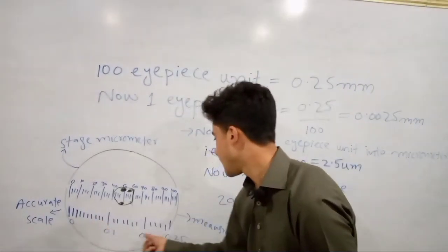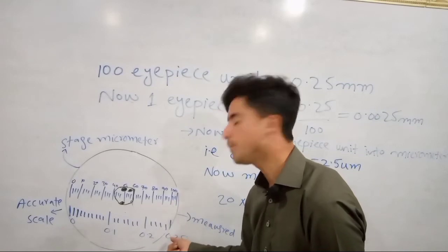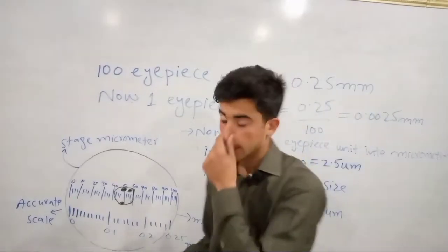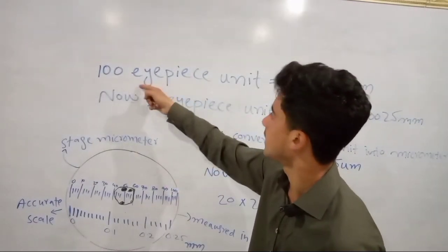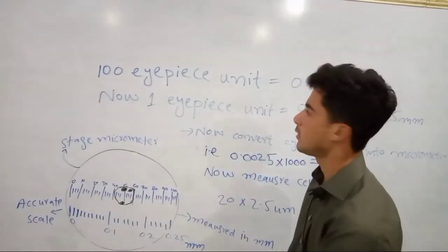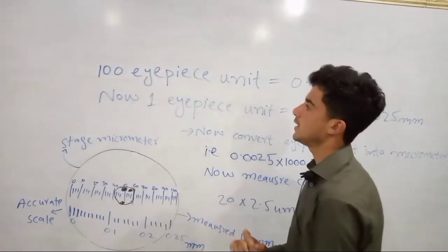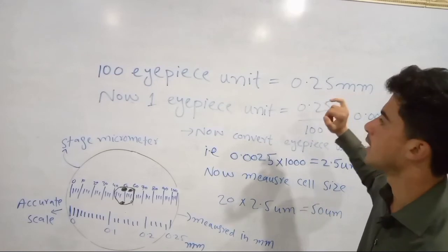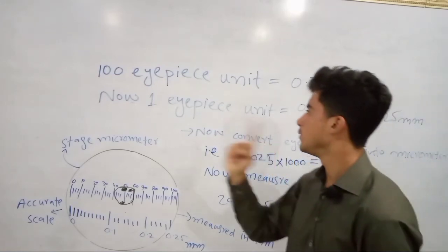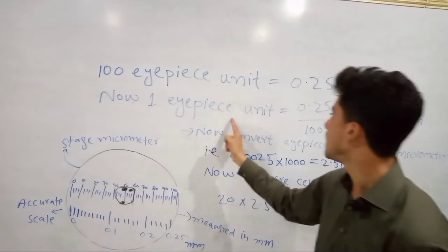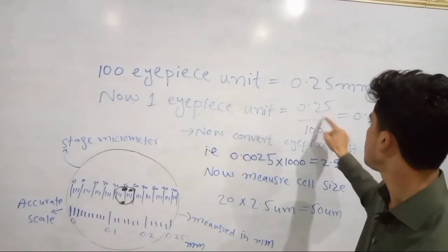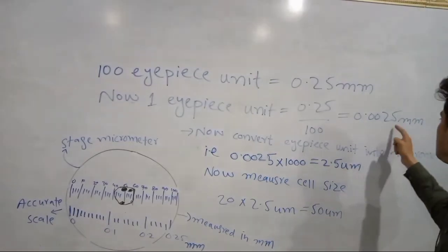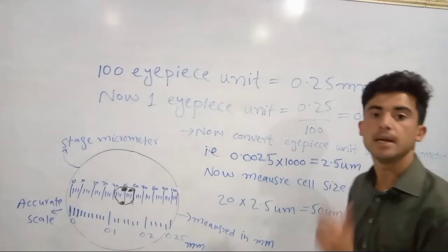If you want to measure with the eyepiece, one eyepiece unit equals 0.25 millimeters.